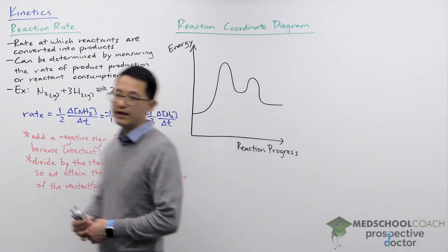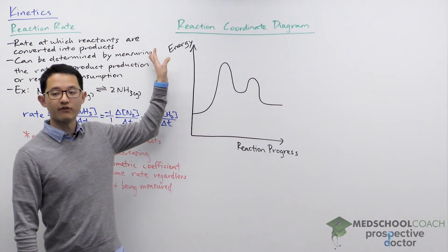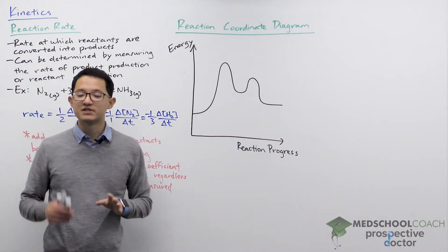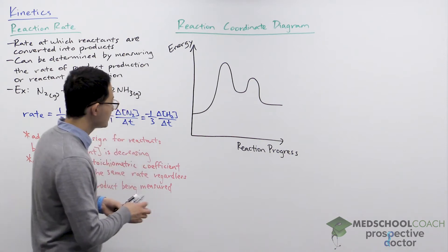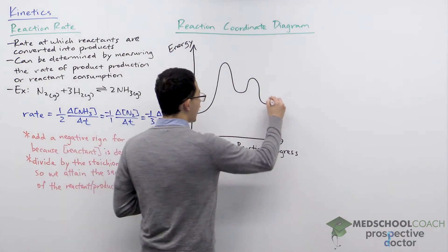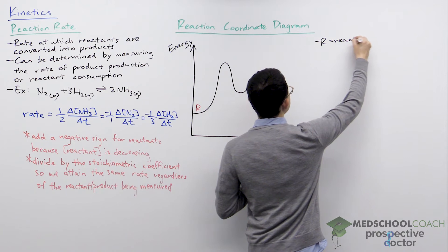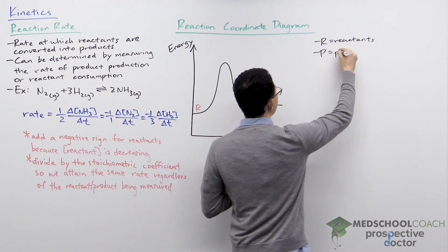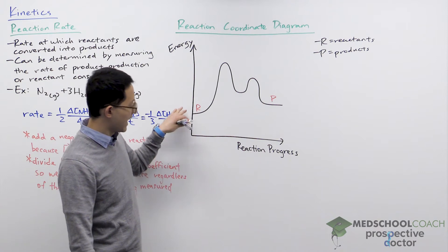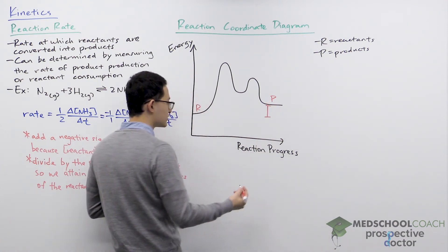The other topic in this video is the reaction coordinate diagram, which shows us the energy of our molecules during the course of a chemical reaction. There are several key parts to note. At the beginning of the reaction we have our reactants (R), and at the end we have our products (P). We can compare the energy of the reactants and the energy of the products — this difference gives us the change in energy of the reaction.